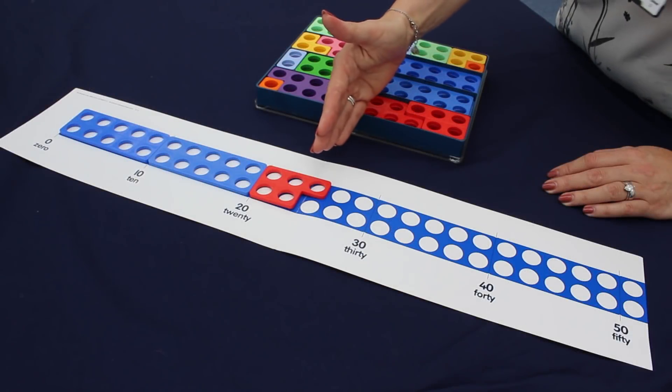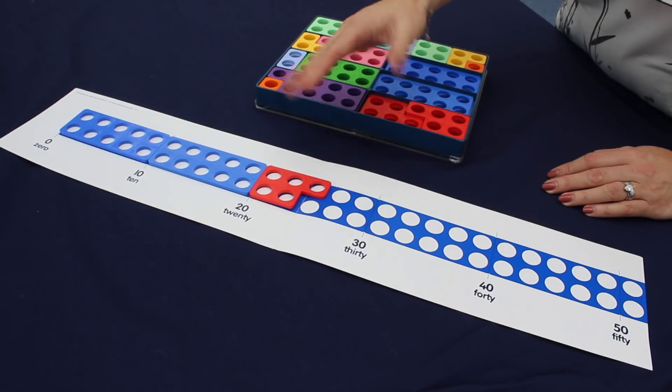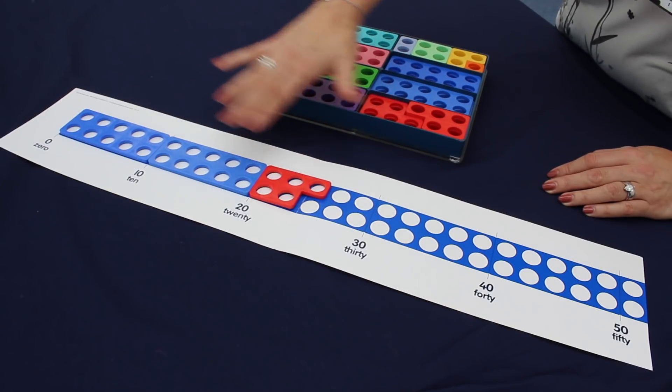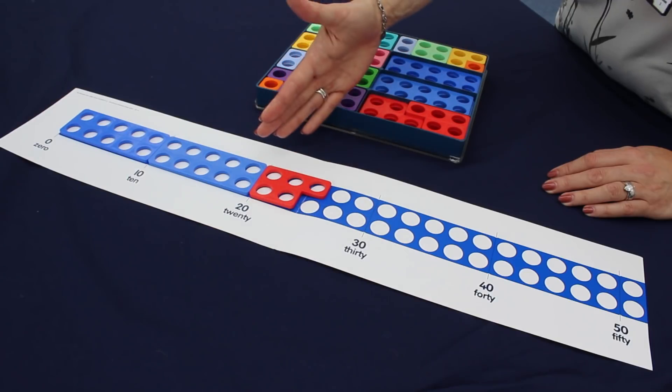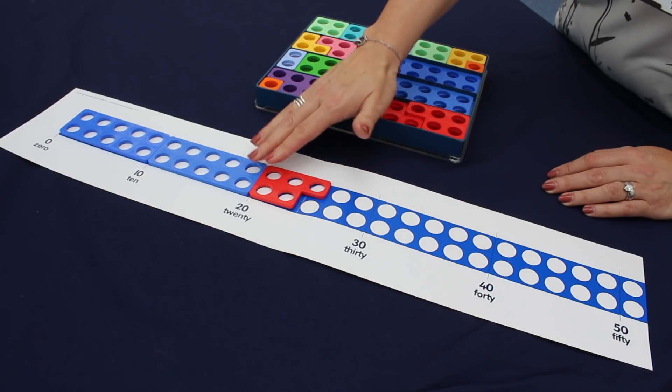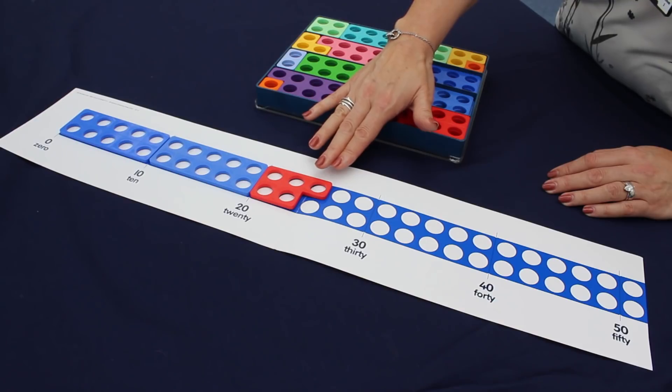And then choosing a number that lies halfway between two numbers would come a little bit later, but the children can see we've got 25 here. Is it closer to 20 or 30? And we can obviously see that this is the number that exactly lies halfway between.